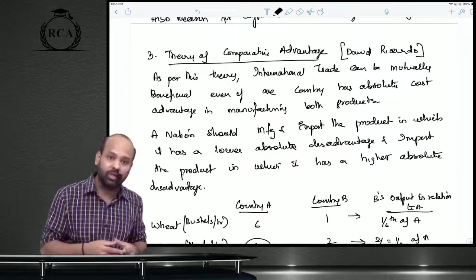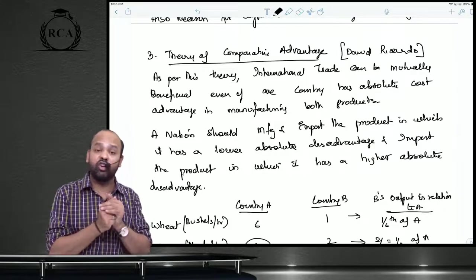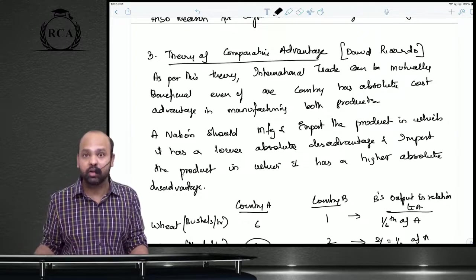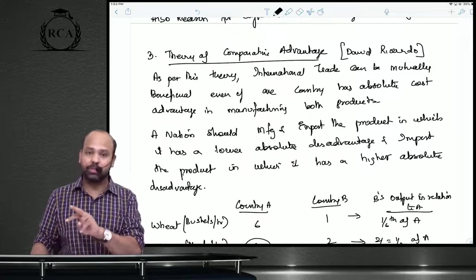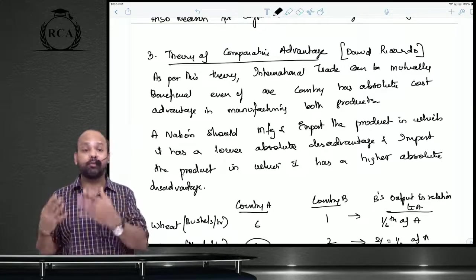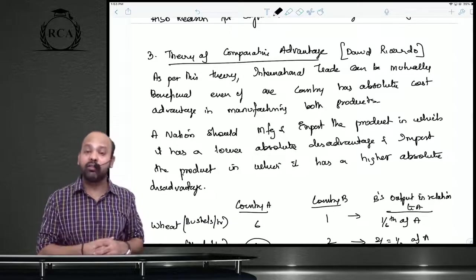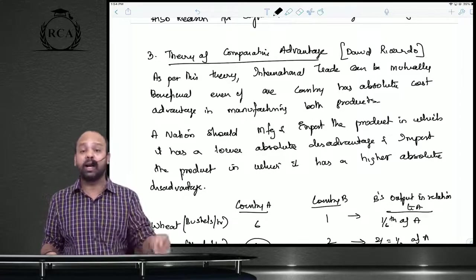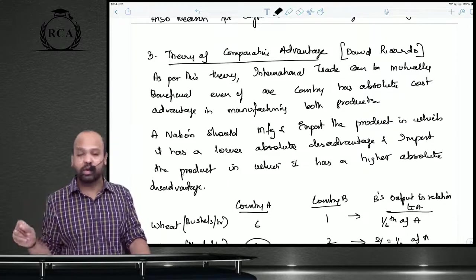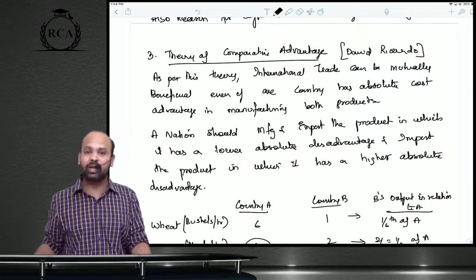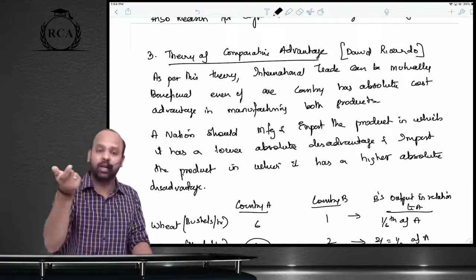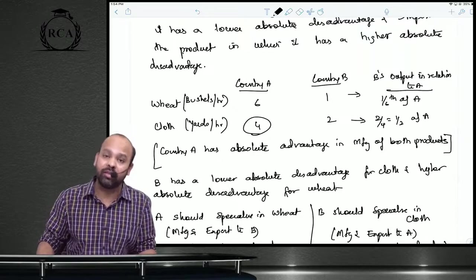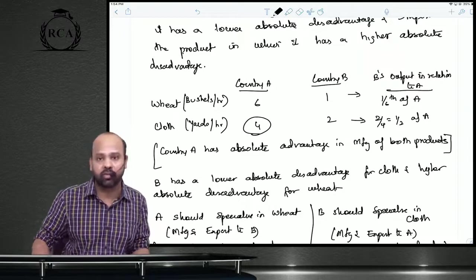This situation is answered by the theory of comparative advantage, given by David Ricardo. It states that international trade can still be mutually beneficial even if one country has absolute advantage in manufacturing both products and the other has absolute disadvantage in both. To determine how they can engage in mutually beneficial trade, you compute comparative advantage — checking in which product the disadvantaged country has a lower absolute disadvantage and in which it has a higher absolute disadvantage.